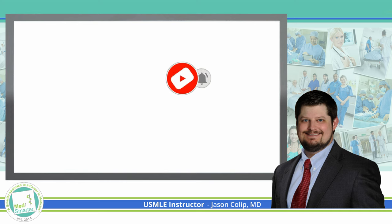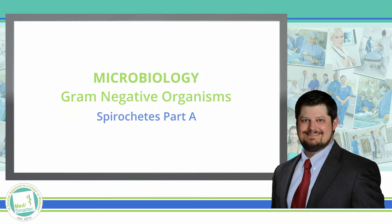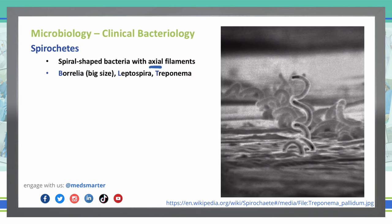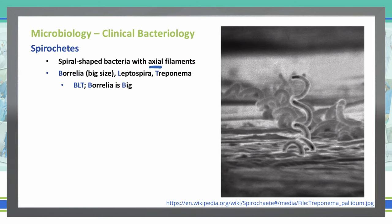Let's continue our discussion of gram-negative organisms and discuss spirochetes. Spirochetes are spiral-shaped bacteria that have an axial filament in them. Three examples of spirochetes are Borrelia — which you can think of as big-sized — Leptospira, and Treponema. Treponema is most commonly known as syphilis. We can remember these three organisms as spirochetes using the mnemonic BLT, where Borrelia is big.